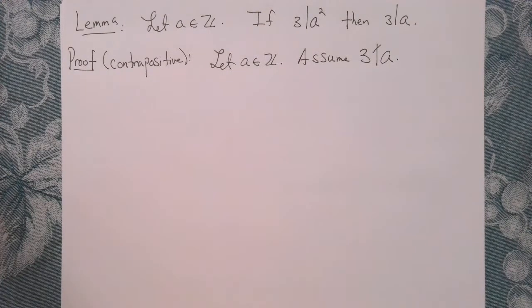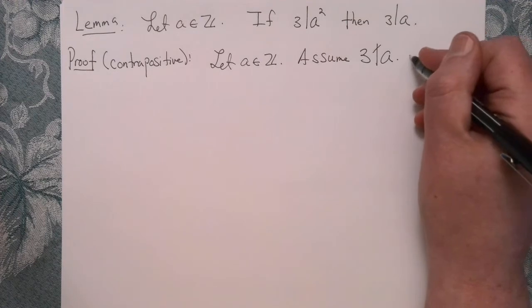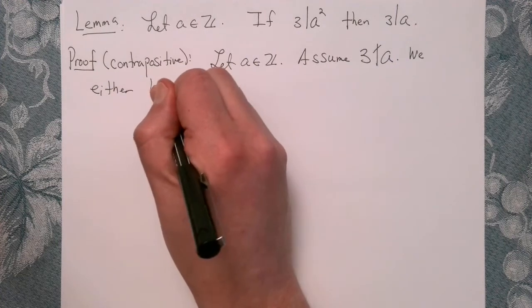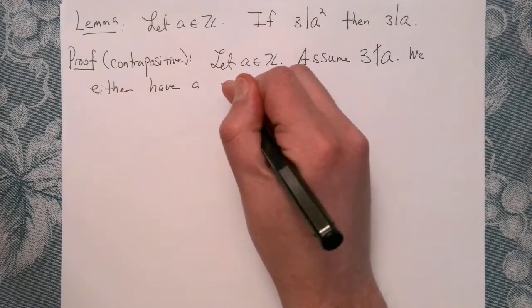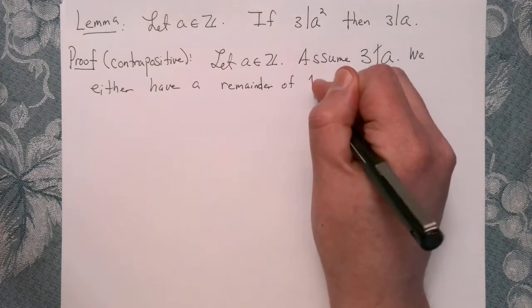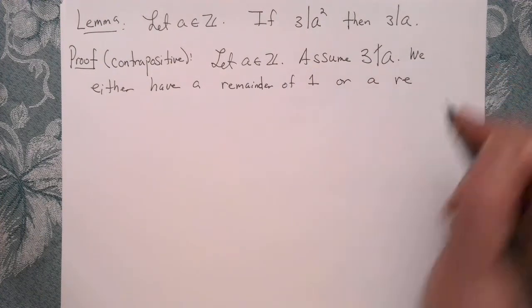Well, if 3 divides A, if it actually did divide A, then there would be a remainder of 0, right? So if 3 doesn't divide A, you're either going to have a remainder of 1 or a remainder of 2. Those are your only options when you divide an integer by 3.